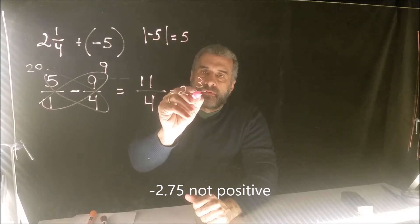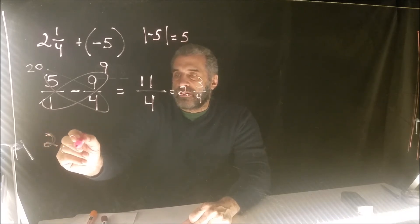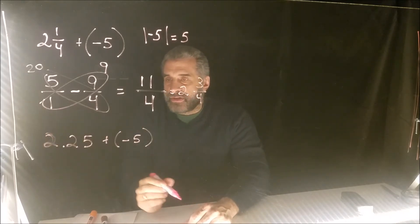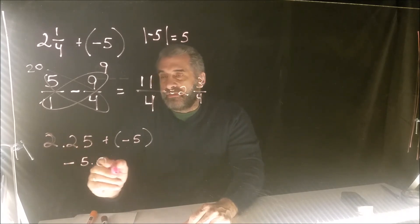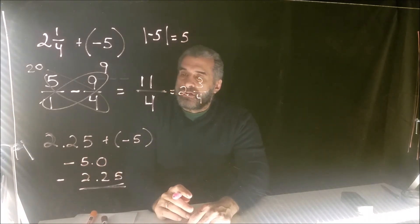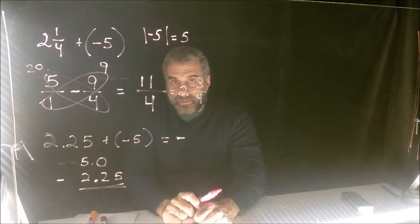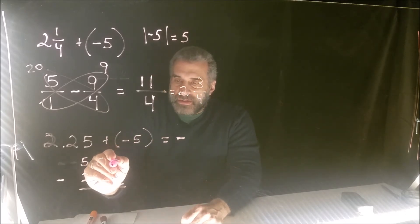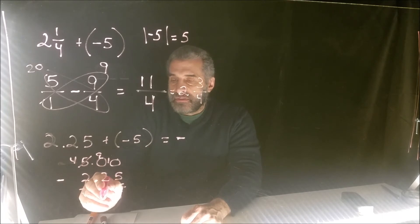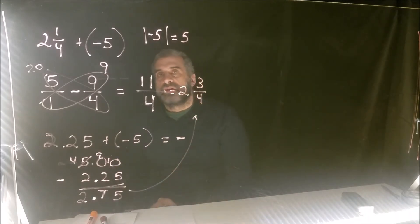11 fourths equals 2 and 3 fourths. Alternatively, convert to decimals: 2.25 plus negative 5. The absolute value of negative 5 is greatest, so the answer is negative. We compute 5.00 minus 2.25: borrow to get 9 minus 2 is 7, with the decimal lined up, giving 2.75 — which is 2 and 3 fourths.